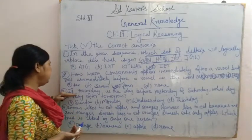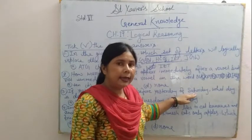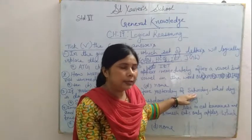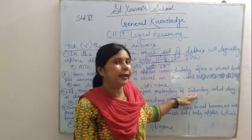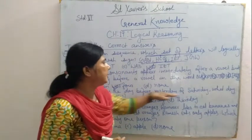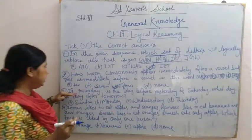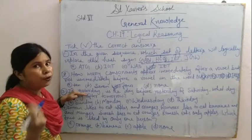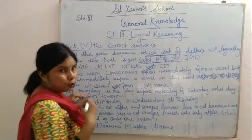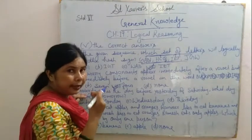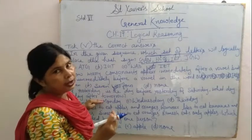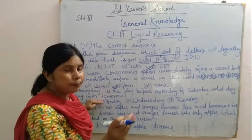Now the third question: if yesterday is the day after tomorrow of Saturday, then the day before Saturday would be Thursday. If yesterday was Thursday, it means today is Friday. So the day after tomorrow would be Sunday.